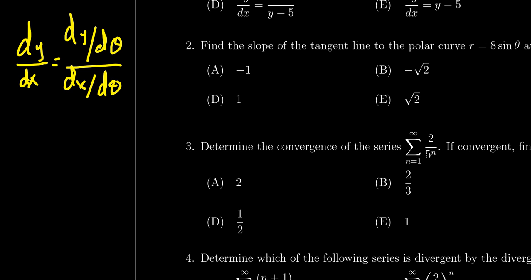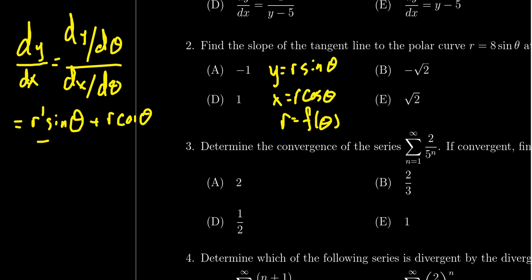Where here, remember, y equals r sine theta and x equals r cosine theta. And so taking the derivative here, without even knowing what the function is going to be, if we treat r just as a function of theta, the general formula you can see very quickly from the product rule is you're going to get r prime sine theta, and then you're going to get plus r cosine theta as your numerator. And then in the denominator, you end up with r prime cosine theta minus r sine theta. So without even knowing what r is, we get the following.